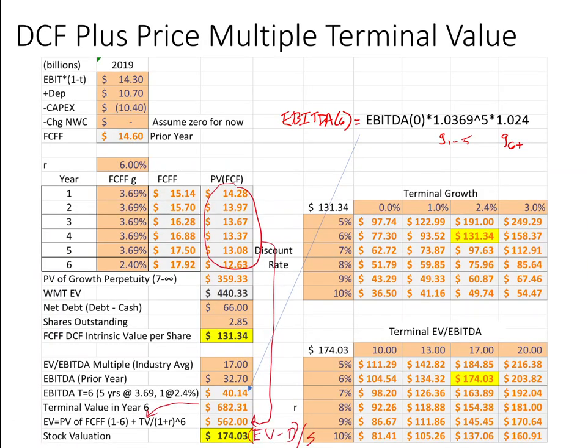Now I want to show a hybrid model — a hybrid between DCF and a price multiple. I'll take the present value of the next six years of cash flows, but instead of a growth perpetuity, I'll assume Walmart seven years from now is worth 17 times EBITDA. That EV/EBITDA multiple of 17 is based on comparable companies in discount retail and food stores at a mature stage, where the average EV/EBITDA is around that level.